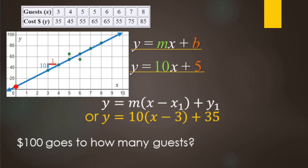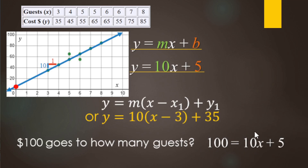With our prediction equation, we can make predictions. For example: if you have $100, how many guests can you feed? Looking at the graph, $100 falls between 9 and 10 guests. Or substitute into the equation: replace y with 100, subtract 5 to get 95, then divide by 10 to get 9.5. Since you can't feed half a person, round down to 9 guests.